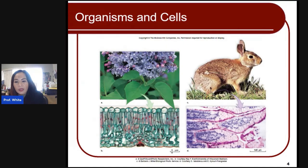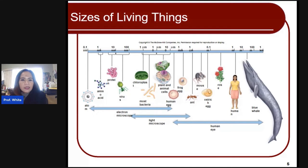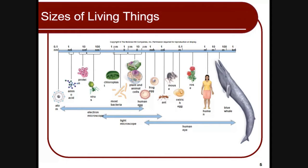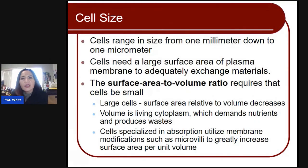All plants and animals are composed of cells. As you can see in this diagram, the cell is around about 1 micrometer to 10 millimeters big. To put it into perspective, you can see that the cell is around the middle — plant and animal cells — as opposed to atoms, which are of course the smallest in size. To compare, the blue whale is on the far right end. The cell range, as I mentioned, is from one millimeter down to one micrometer.